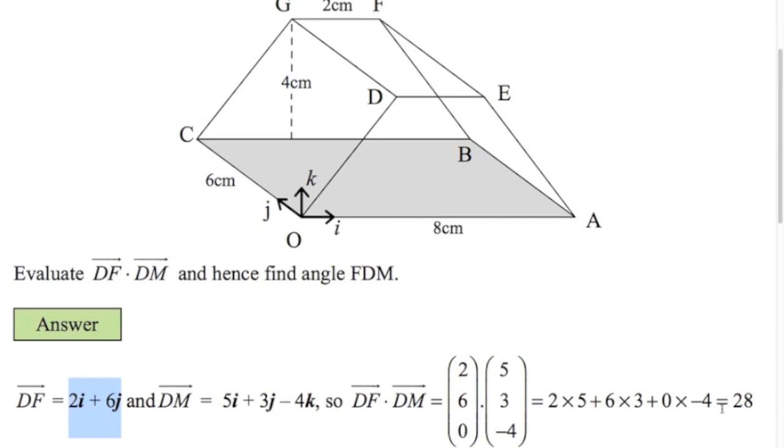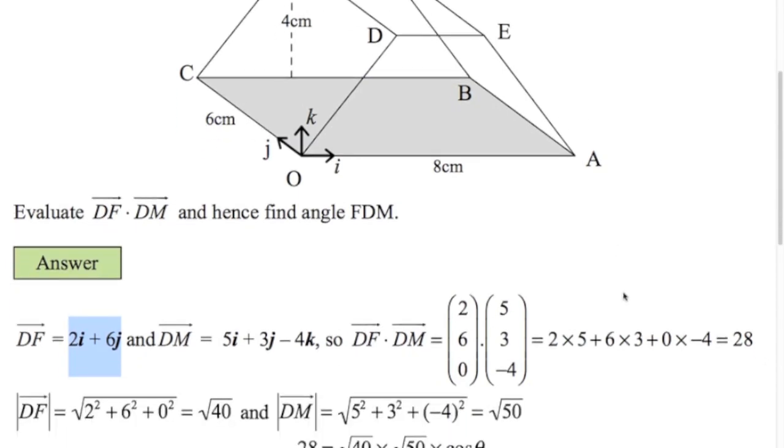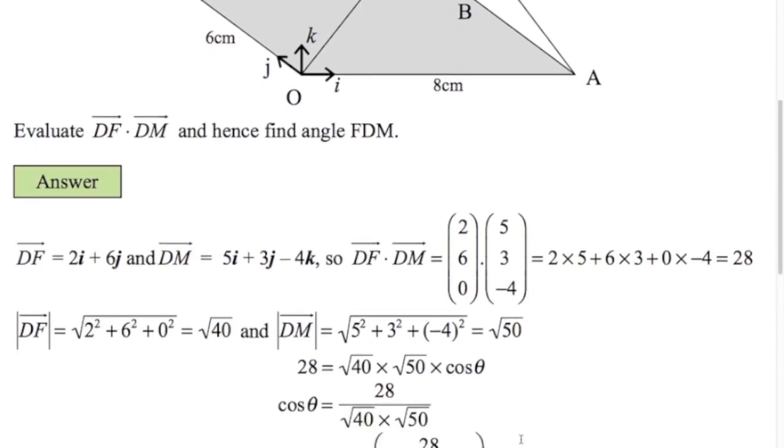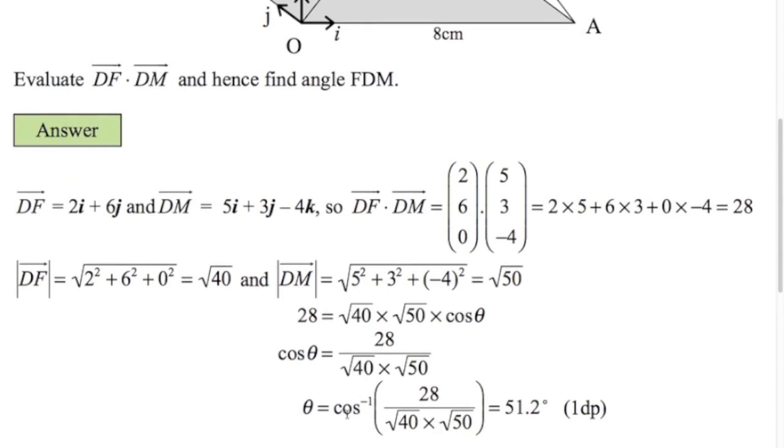So that's how we get df and dm. And now we're just going to apply the formula. Do the dot product. We get 28 of the dot product. The length of df and the length of dm. df is root 40 and dm is root 50. Don't simplify these. Don't use the rounded answers to three sig figs. Just carry those numbers there. Square root of 40 and the square root of 50. Substitute into the formula. Divide both sides by root 40 and root 50. Shift cos of that exact answer there. The answer is 51.2 degrees.